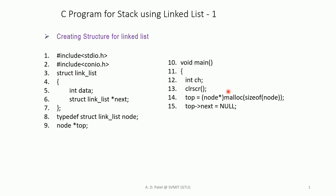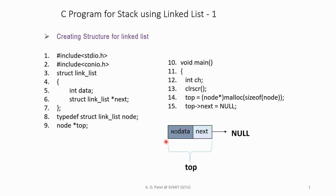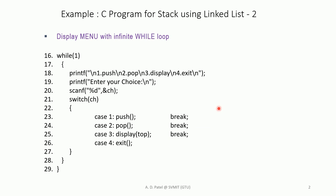After that we set top->next = NULL, so this pointer will point to null. This gives us a top node that has no data in its data section, and the pointer of top is pointing to null — representing an empty stack.